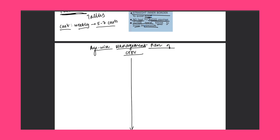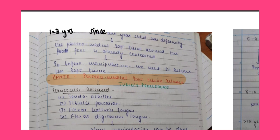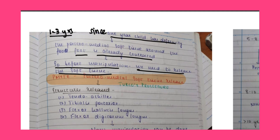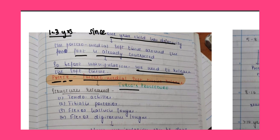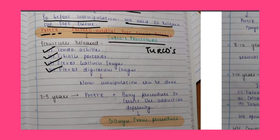Age-wise management plan: 0 to 1 year — reduction and maintenance by Ponseti method. 1 to 3 years — since the child has had deformity, the posteromedial soft tissue is already contracted, so before manipulation we need to release it. This is done by the posteromedial soft tissue release procedure, also known as the Turco procedure. Structures released include tendo Achilles, tibialis posterior, flexor hallucis longus, and flexor digitorum longus.